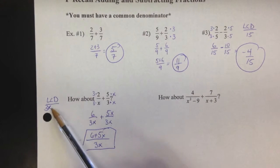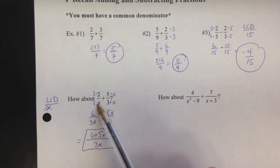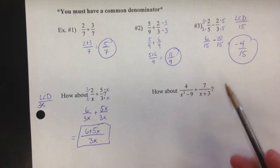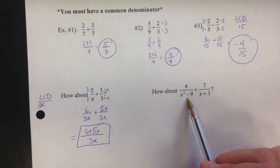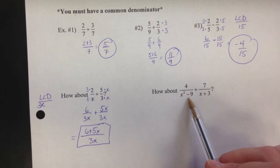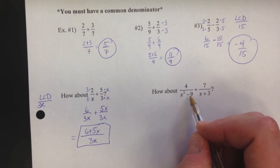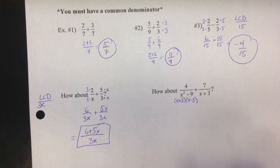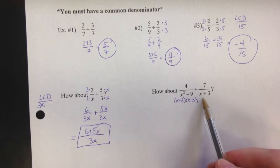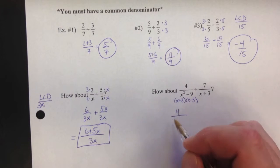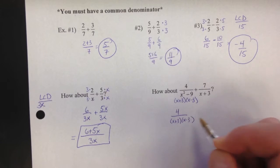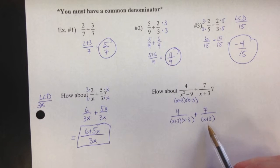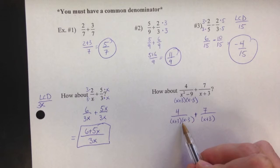The LCD must be divisible by all the terms in your denominator. Consider 4 over (x squared minus 9) plus 7 over (x plus 3). First, factor the denominators if possible. x squared minus 9 is a difference of two squares: it factors as (x + 3)(x − 3). So we rewrite the first fraction as 4 over (x + 3)(x − 3), and the second as 7 over (x + 3). These are not yet identical denominators.